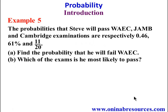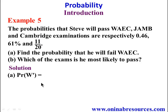Example 5: The probabilities that Steve will pass WAEC, JAM, and Cambridge examinations are respectively 0.46, 61%, and 11/20. Part A: find the probability that he will fail WAEC. The probability of failing WAEC is the complement of passing, so it is 1 minus 0.46, which gives 0.54.